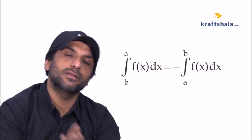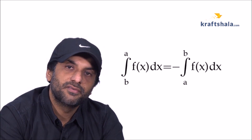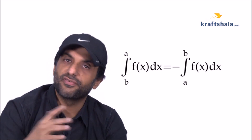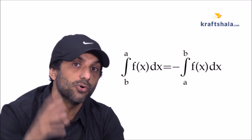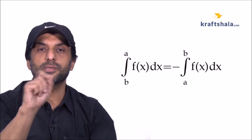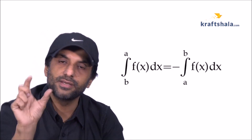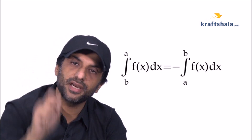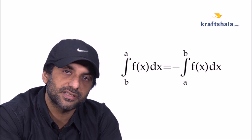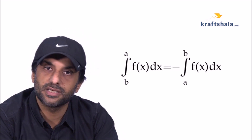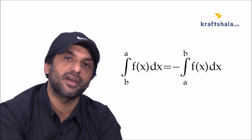The second property addresses the case where the lower limit is greater than the upper limit. In that case, you can simply put a negative sign and change the interval. So the integral from b to a of f(x) dx can be written as minus the integral from a to b of f(x) dx.